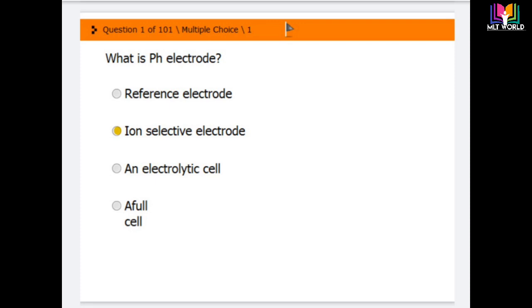Question number one: What is pH electrode? Options are reference electrode, ion selective electrode, electrolytic cell, and full cell. The correct answer is pH electrode is ion selective electrode.